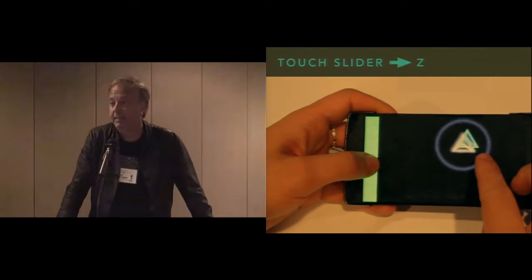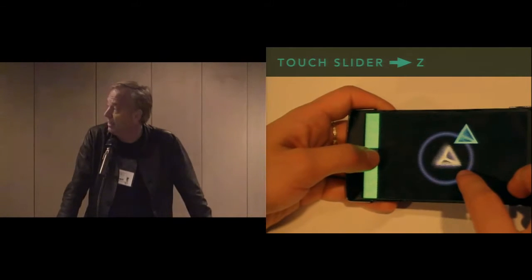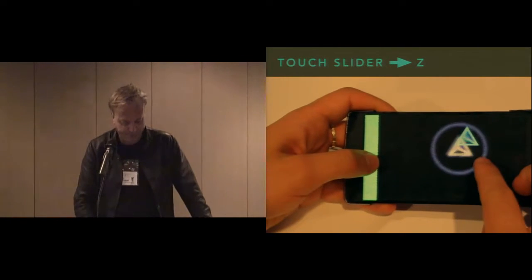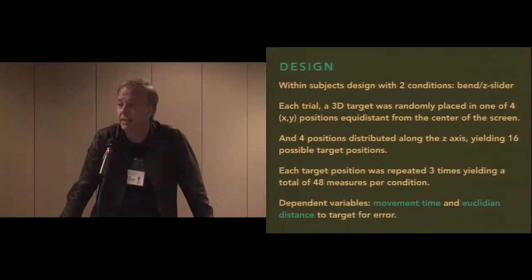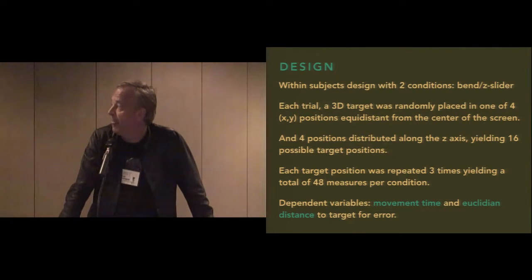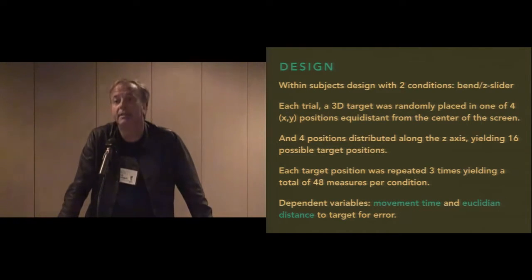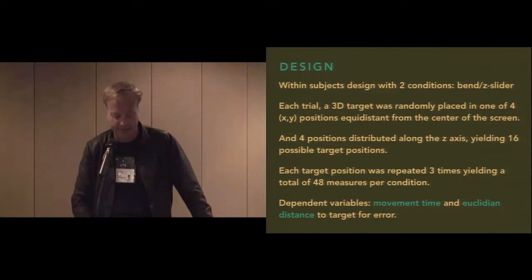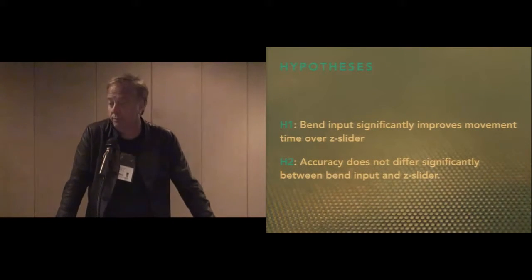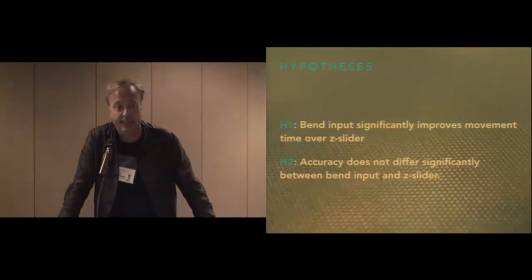Subjects were asked to touch a 3D tetrahedron-shaped cursor and align it in three dimensions with the position of a 3D tetrahedral target. We used a within-subject design with two conditions: bend versus Z slider. In each trial, a 3D target was placed randomly in four positions equidistant from the center of the screen, and we had four positions along the Z axis as well, up to about two centimeters depth, yielding 16 possible target positions repeated three times for 48 measures per condition. We measured movement time and Euclidean distance to target as error.